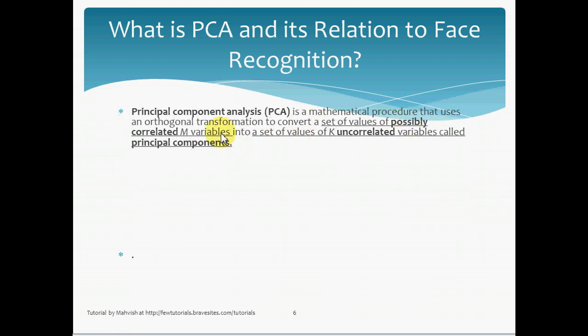Now, by definition, principal component analysis is a mathematical procedure that uses an orthogonal transformation to convert a set of values of possibly correlated N variables into a set of K uncorrelated variables, called the principal components. And the number of principal components is always less than or equal to the number of original variables, that is K is less than or equal to M.